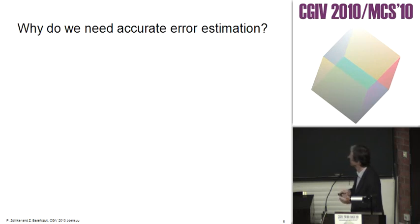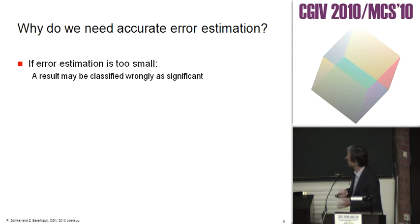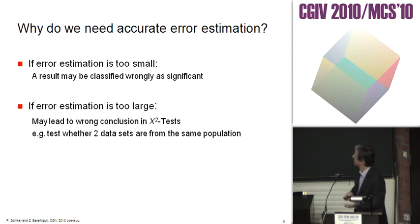Why do we need accurate error estimation? If error estimation is too small, a result may be classified wrongly as significant. If the error estimation is too large, it may lead to wrong conclusions in chi-square tests, for example testing whether two data sets are from the same population.